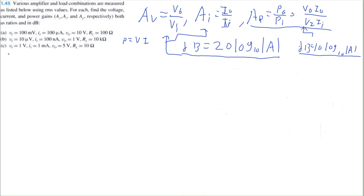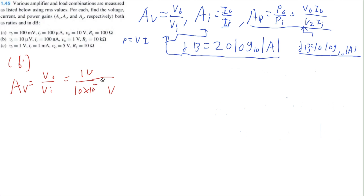Now let's solve part B. Our voltage gain is V-out divided by V-in, which is 1 volt divided by 10 microvolts — 10 times 10 to the negative 6 volts. That equals 1 times 10 to the 5th volt per volt, or 20 log base 10 of 1 times 10 to the 5th, which gives 100 dB.